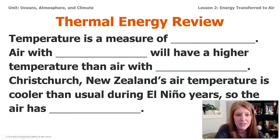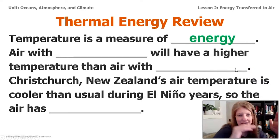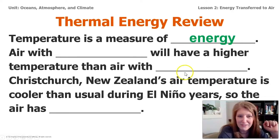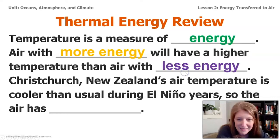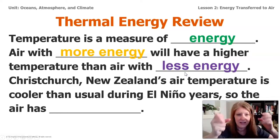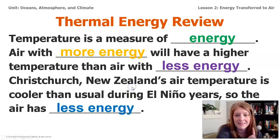Let's fill the blanks in here: temperature is a measure of energy. Air with more energy will have a higher temperature than air with less energy. So let's pull this all together: Christchurch, New Zealand's air temperature is cooler than usual during El Niño years, which means the air actually has less energy. And that's an important thing to try to understand.